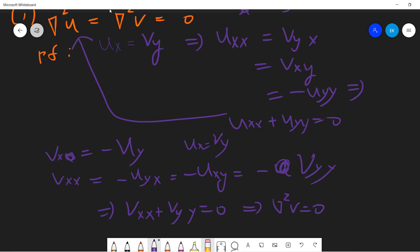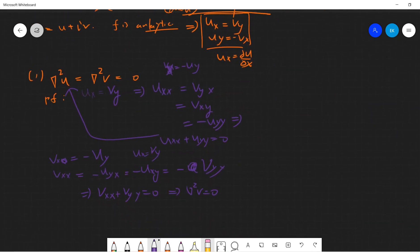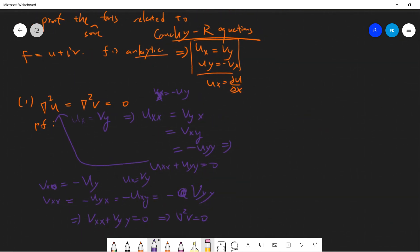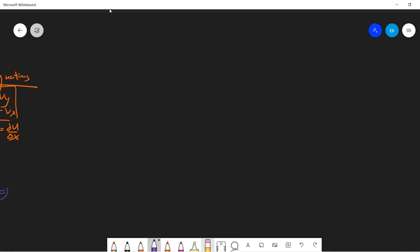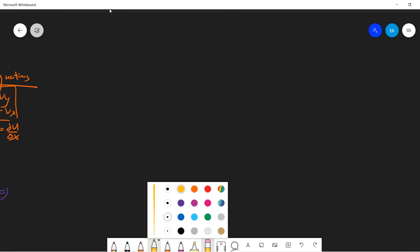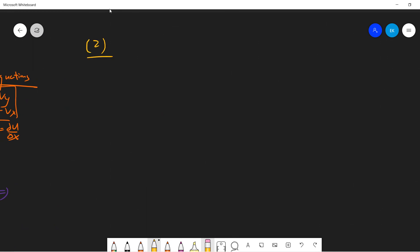So that means the real part and the imaginary part satisfy the Laplace equation. The second fact is also easy: ux uy plus vx vy equals zero.